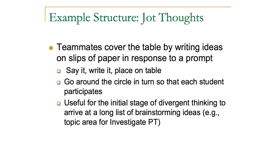A second example is JotThoughts. In brainstorming, there are several activities — one is divergent thinking, collecting a whole bunch of different ideas, and then as a team using convergent thinking to pick the best ideas for discussion. JotThoughts facilitates that and is very useful for the performance task when trying to arrive at a particular problem students want to work on. Teammates cover the table by writing ideas on slips of paper; each teammate says their thought, writes it down, and places it on the table in a round-robin style. Then all students discuss everything on the table and arrive at a consensus on the best ideas.